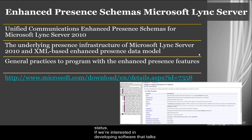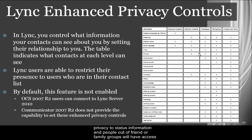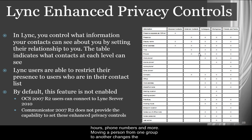If we're interested in developing software that talks with Lync, there's a Microsoft document related to the presence schema and to the XML information available for the aforementioned use. Lync does a lot of things out of the box, so we don't often need to develop customized software. A user is also enabled to apply privacy status information, and people not in their friend or family groups will have access only to basic information. Contacts with a high level of trust have access to our working hours, phone numbers, and more. Moving a person from one group to another changes the information we publish for them through Lync Client.